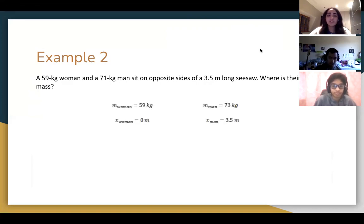So first, it's really helpful to just set up our variables. Sometimes it can be helpful to draw a diagram. We know that the mass of the woman is 59 kilograms, the mass of the man is 71 kilograms, and that the position of the woman would be at 0 meters and the man would be 3.5 meters.